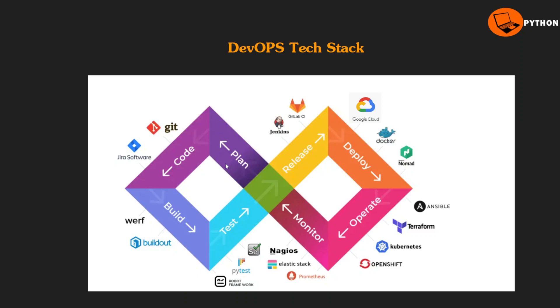Next slide - the DevOps tech stack. So here we have the DevOps flows. For planning, it can be Excel, it can be Jira, or it can even be a sprint tool to do planning.